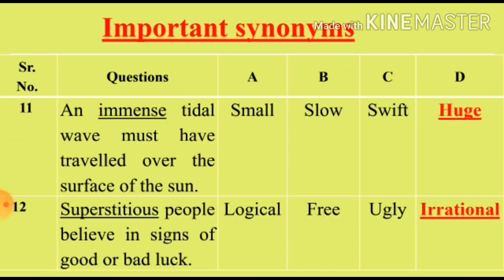Question 11: 'An immense tidal wave must have travelled over the surface of the sun.' We will see the synonym for the word 'immense'. Option A: Small (chhoti). Option B: Slow (ahista). Option C: Swift/Smooth (humvar). Option D: Huge (badi). Options B and C are irrelevant. We will select from Option A and D. Option D, Huge, is the right answer for Question 11.